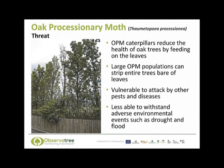The caterpillars threaten the health of oak trees because they feed on the leaves. Large populations completely strip oak trees bare of their leaves. They also leave them vulnerable to attack by other pests and diseases, and the trees are less able to withstand adverse environmental events such as drought and flood.